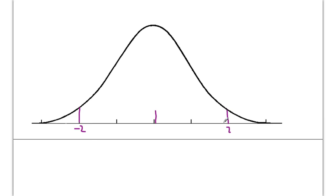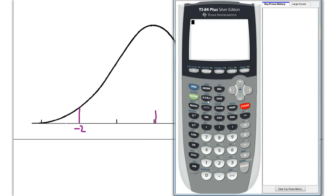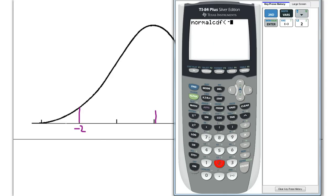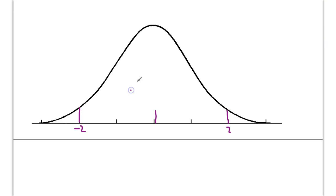And the way that we learned how to do that is by using our calculator. So let's take a look at our second VARs, which brings up our distributions. Let's go down to normal CDF, and we're going to find the area under the normal curve between negative two and positive two standard deviations. So I do normal CDF, negative two, comma, two. And when I hit enter, I get 0.954 roughly.